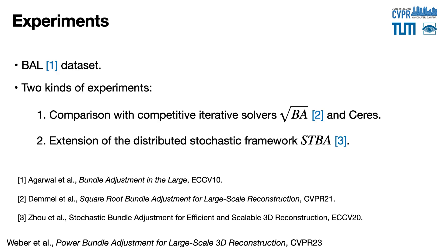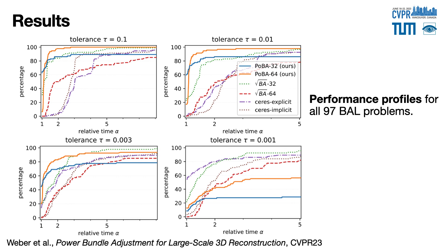We run two kinds of experiments. First, we directly compare POBA with the very competitive solver Square Root BA. Second, we incorporate our solver into the distributed stochastic framework STBA by replacing its direct solver with our power expansion solver. We compare POBA in single and double precision to the Square Root BA solvers and to the implicit and explicit versions of the conjugate gradient solver. We are interested in two factors: lower runtime and better accuracy. Performance profiles evaluate both, and we plot them for all 97 problems across four different tolerances.